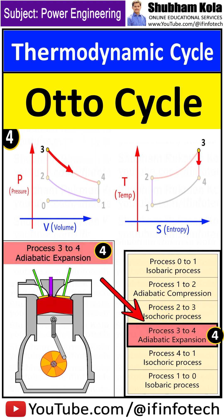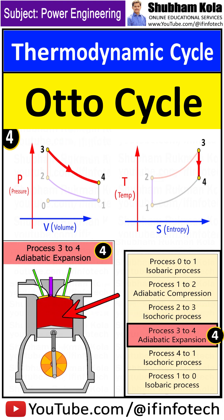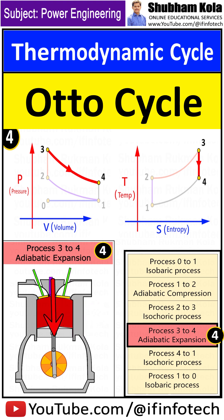Process 3 to 4 is an adiabatic expansion process where the thermal energy in the combustion chamber is used to do work on the piston, which pushes the piston down, increasing the volume of the chamber. This is known as the power stroke, where thermal energy is turned into motion to power the vehicle.